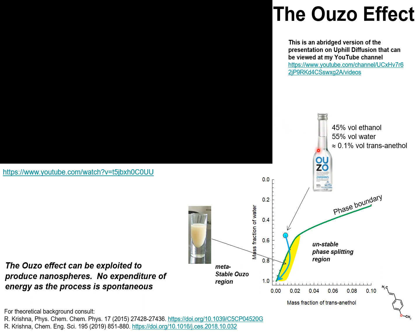Ouzo is an aniseed-based drink consisting of 45% ethanol, 55% water, and 0.1% transanethole. When Ouzo is added to water, it turns cloudy.